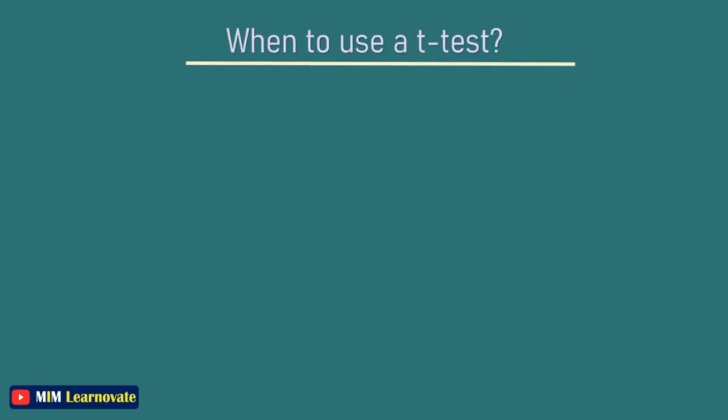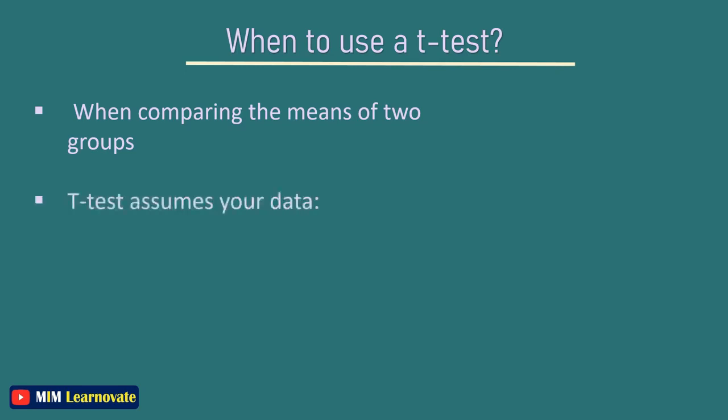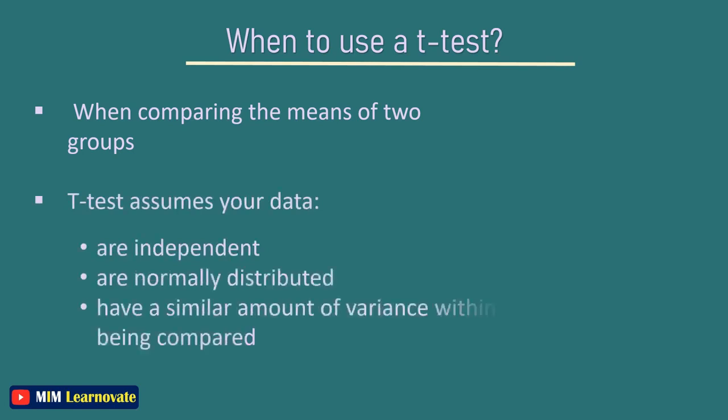When to use a T-test: A T-test can only be used when comparing the means of two groups. If you want to compare more than two groups or if you want to do multiple pairwise comparisons, use an ANOVA test or a post-hoc test. The T-test assumes your data are independent, approximately normally distributed, and have a similar amount of variance within each group being compared.